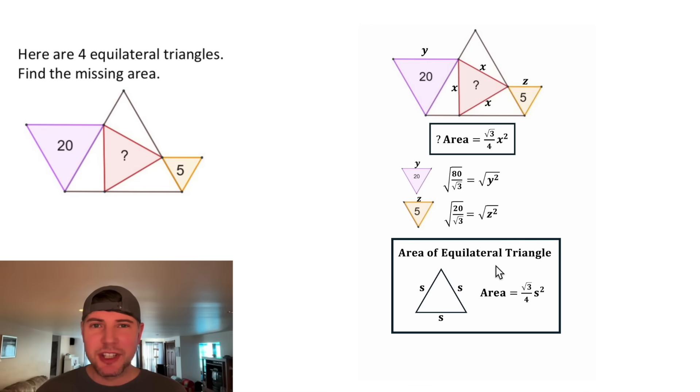Next, we can square root both sides of both equations. On the right-hand side of both of these, the square root and the square will cancel each other out. Now we have values for y and z.